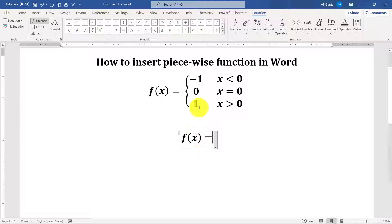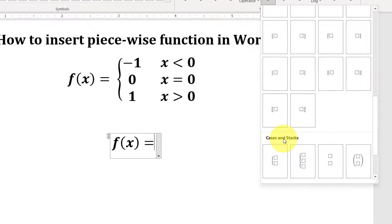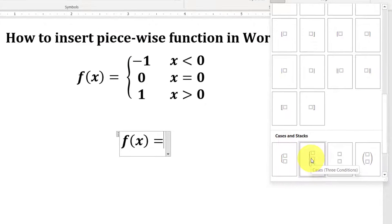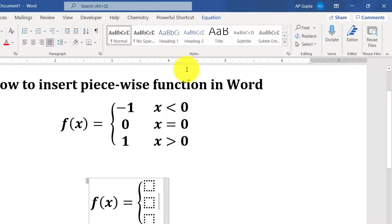Now get the curly braces with three lines. You go to braces, and in cases and stacks you will find this kind of braces. You just insert this. And to get an additional column for this kind of condition, go to matrices.